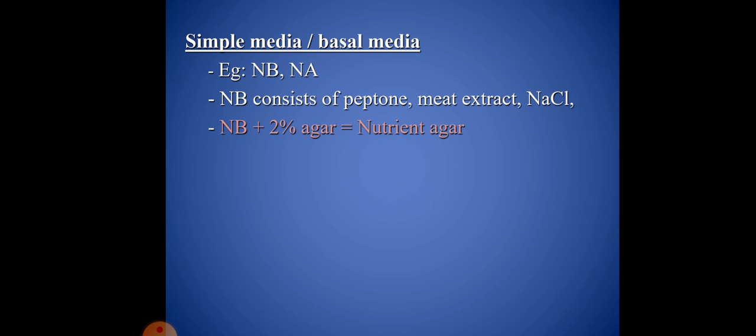Next, we are going to see about simple media or basal media. Simple media provides a simple nutrition source for the growth of microorganisms. Examples: nutrient broth and nutrient agar. Nutrient broth consists of peptone, meat extract, and NaCl. Nutrient broth plus 2% agar is called nutrient agar.